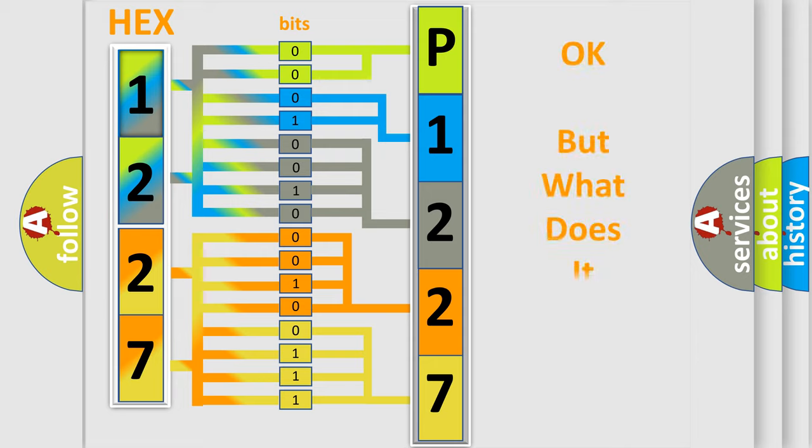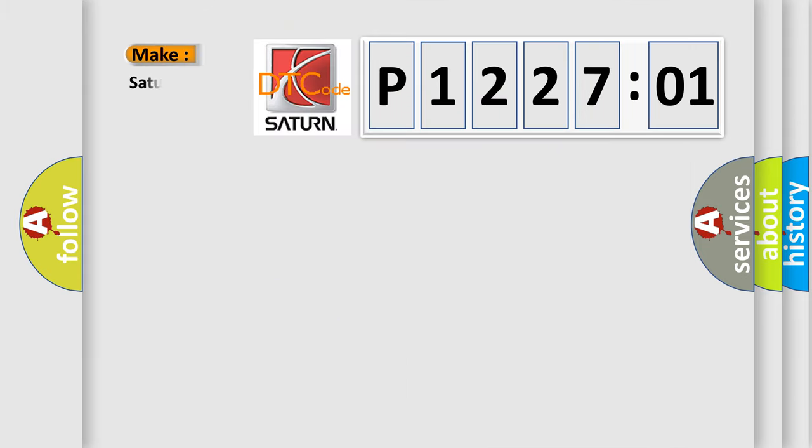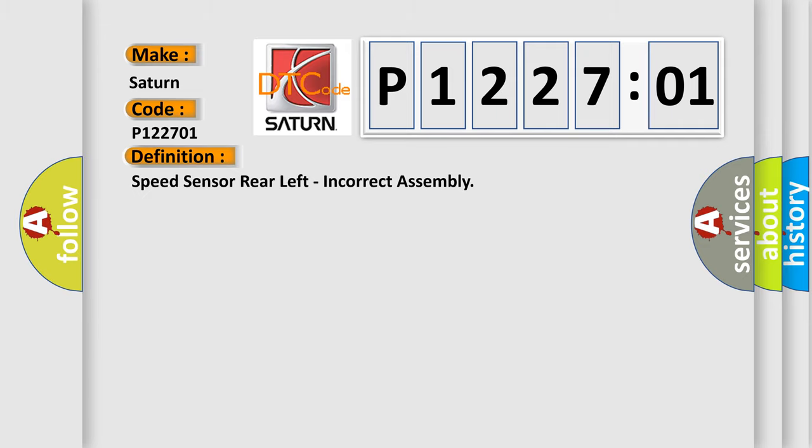The number itself does not make sense to us if we cannot assign information about what it actually expresses. So, what does the diagnostic trouble code P122701 interpret specifically for Saturn car manufacturers? The basic definition is speed sensor rear-left, incorrect assembly.